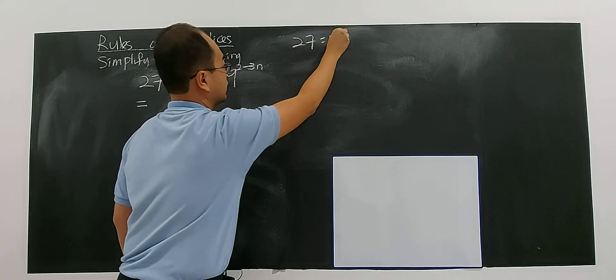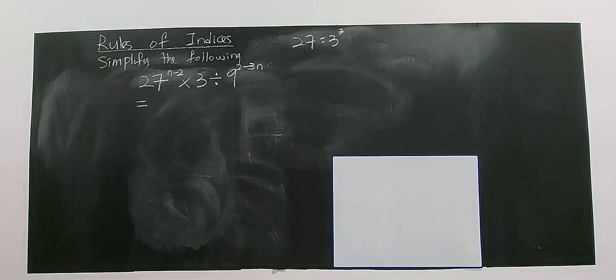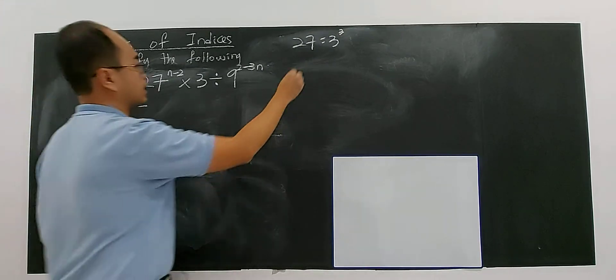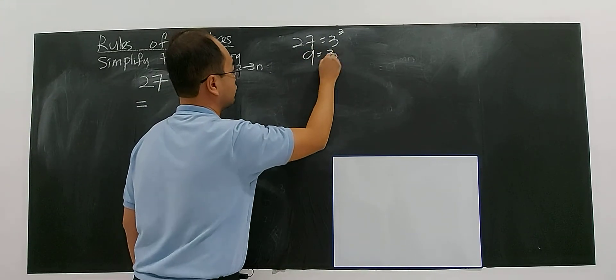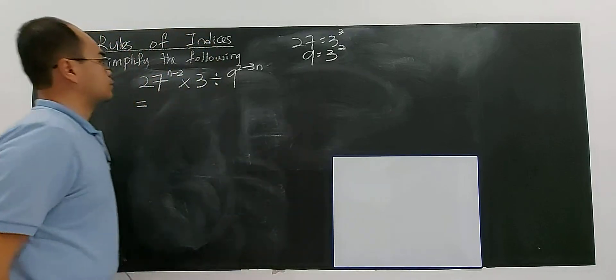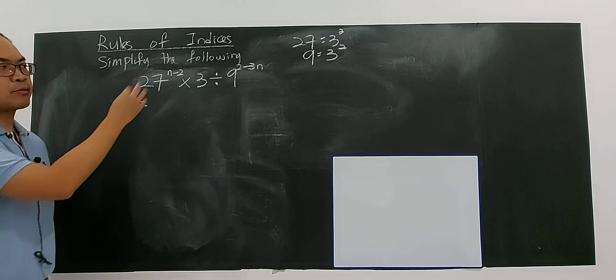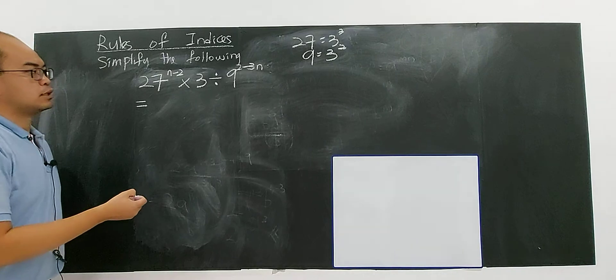27 is 3 to the power of 3, right? 3 times 3 times 3. And 9 is 3 to the power of 2.